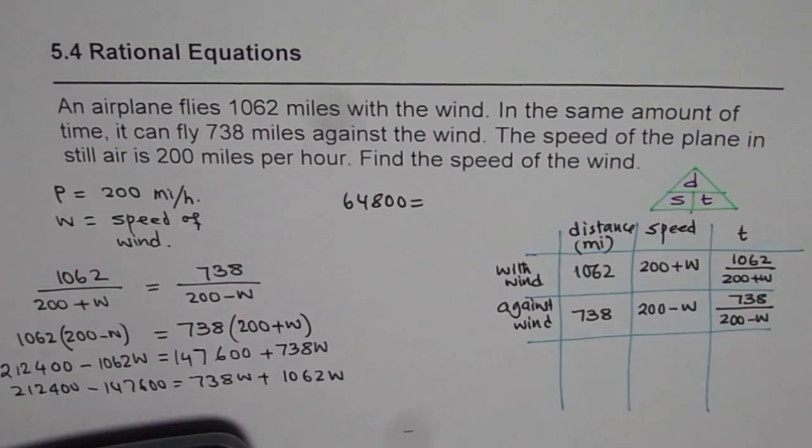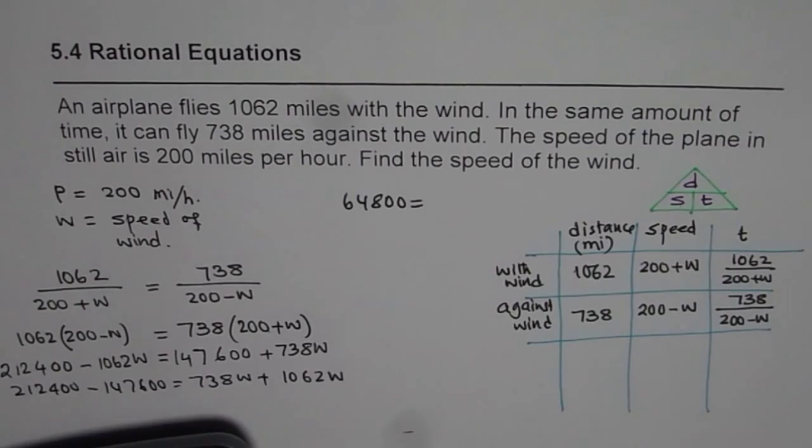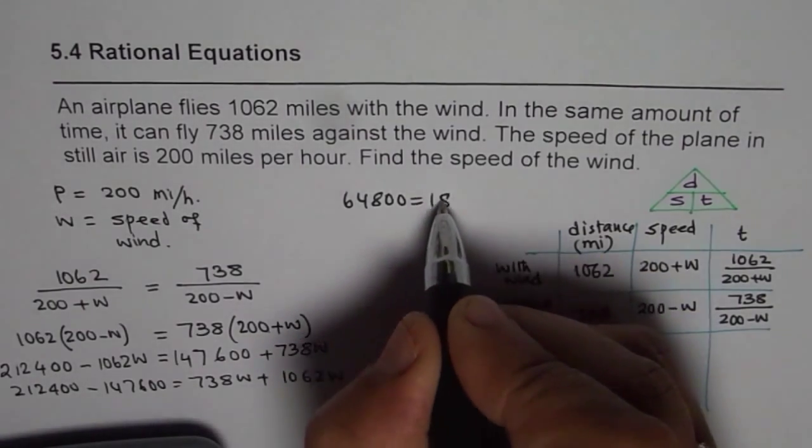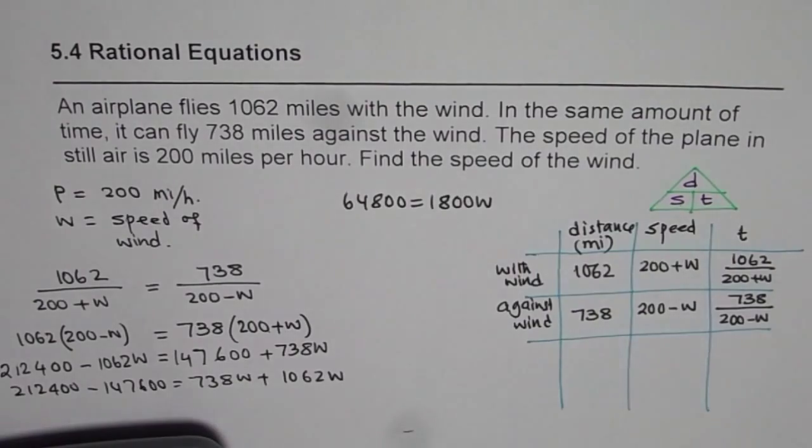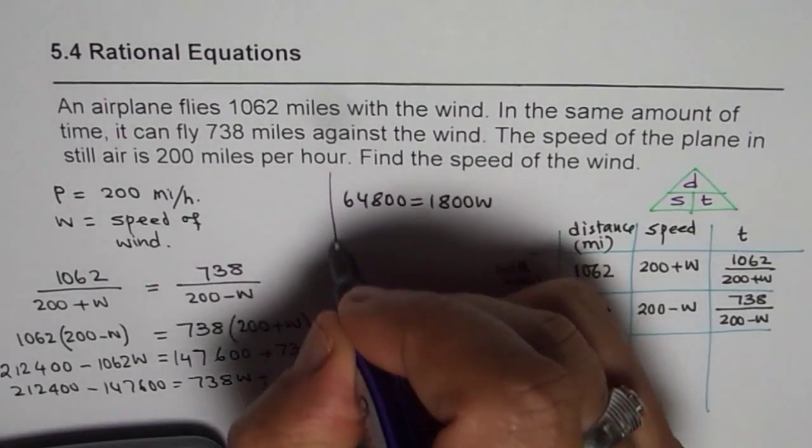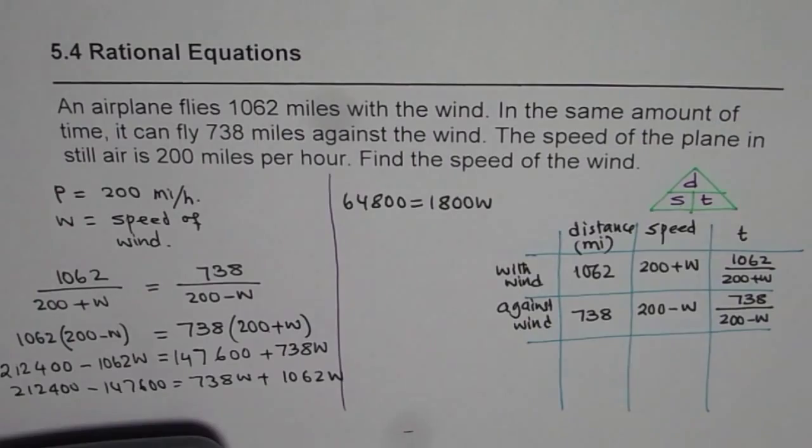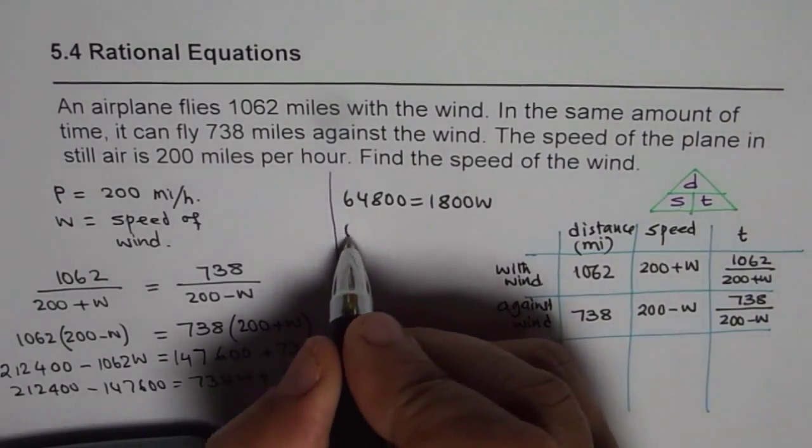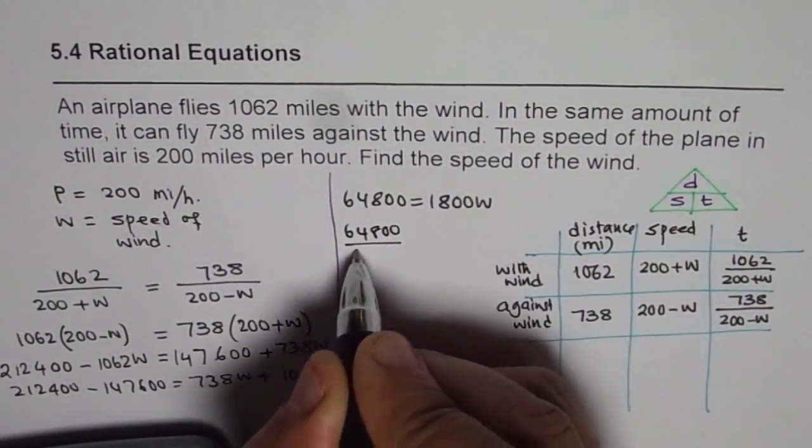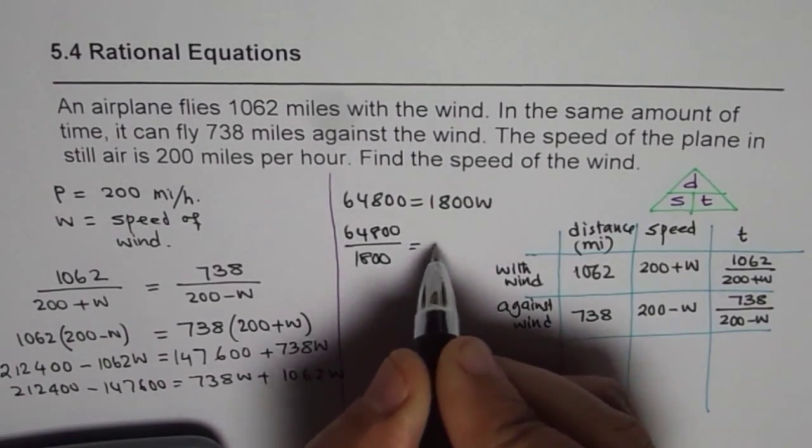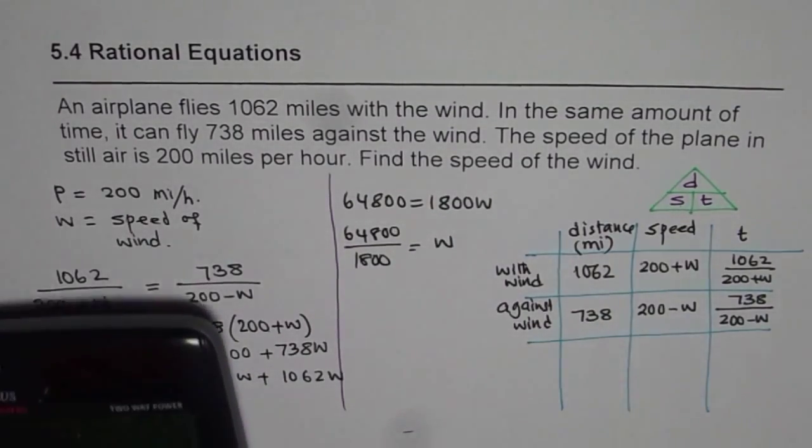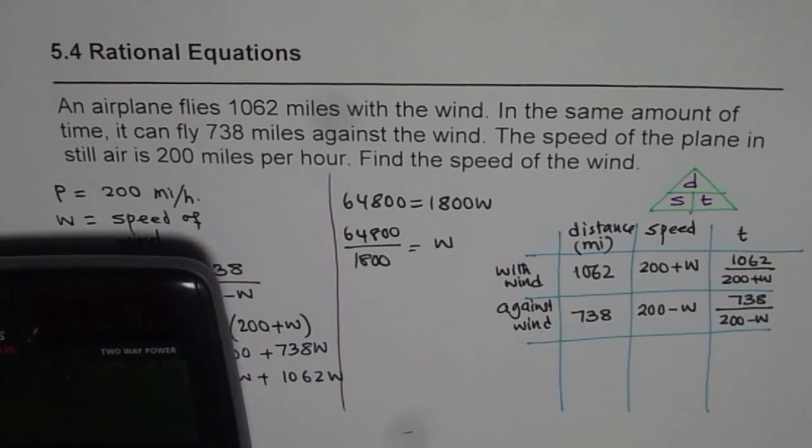So now we can find w by dividing 64,800 by 1800. We have 64,800 divided by 1800 to get the value w. So we have 64,800 divided by 1800 equals to 36.